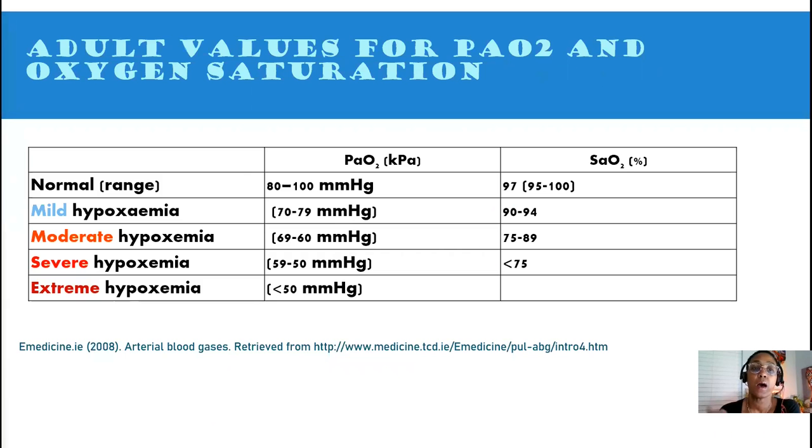We're going to put in another value, another player into the mix. And that's our PaO2 value, which determines the severity of hypoxemia. It's basically measuring our oxygen level in the blood. These are our ranges. Normal ranges 80 to 100. Anything below that would indicate hypoxemia.